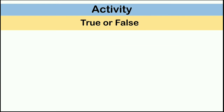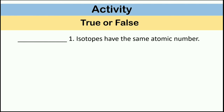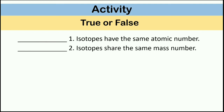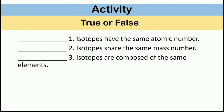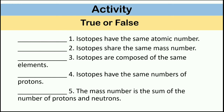Let's have a true or false activity. Number 1: Isotopes have the same atomic number. Number 2: Isotopes share the same mass number. Number 3: Isotopes are composed of the same elements. Number 4: Isotopes have the same numbers of protons. Number 5: The mass number is the sum of the number of protons and neutrons. The answer to number 1 is true.